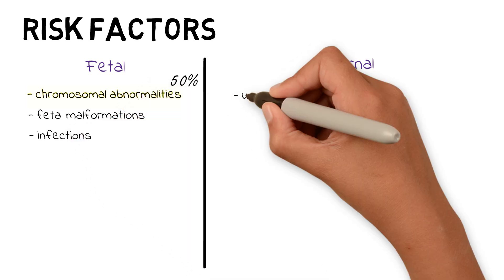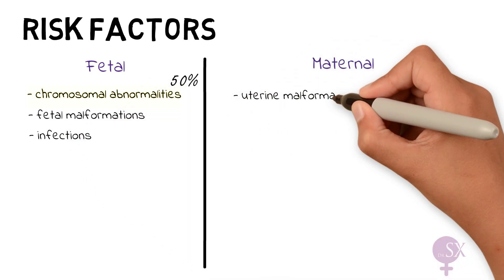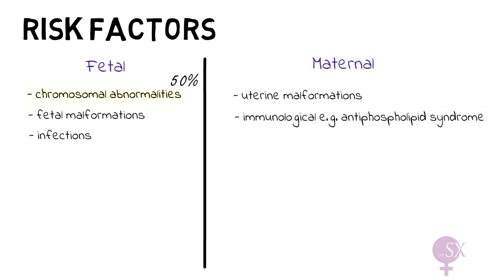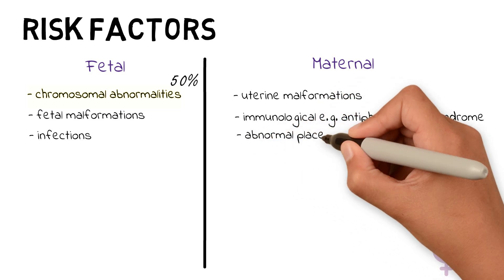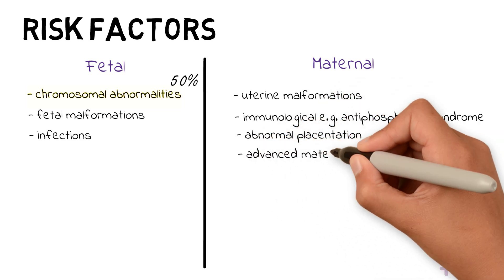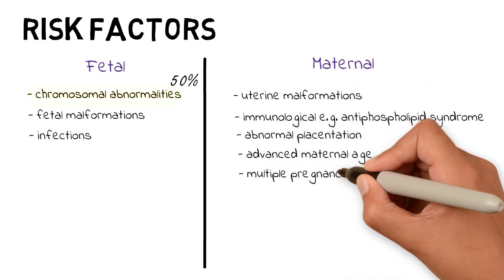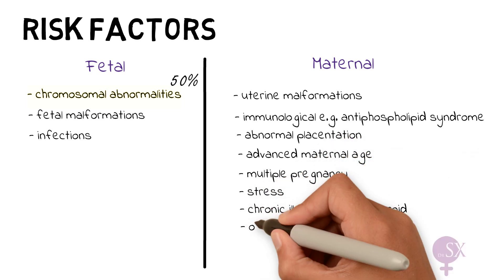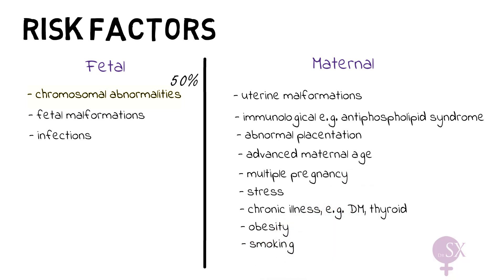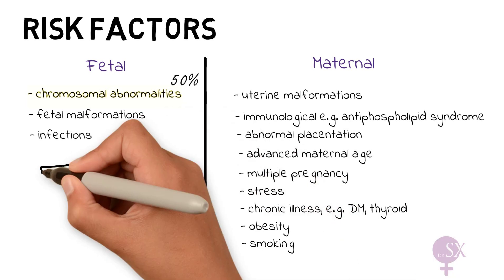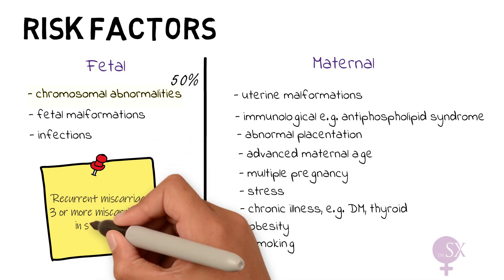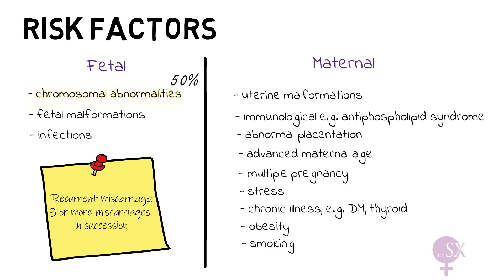Maternal causes for a miscarriage include uterine malformations, immunological causes such as antiphospholipid syndrome, abnormal placentation, advanced maternal age, multiple pregnancy, stress, chronic illness such as diabetes and thyroid disease, obesity, and smoking. As a side note, recurrent miscarriage is when there are three or more miscarriages in succession, and these patients are usually referred to the miscarriage clinic.